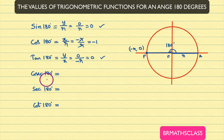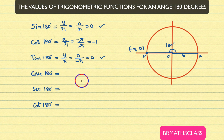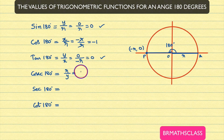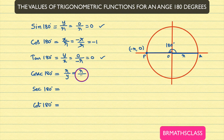Now, we will find cosecant 180 degrees. From the definition of trigonometric functions, cosecant theta is defined as r divided by y. R means the radius of this circle. Y means the y coordinate of this point, which is 0. As the denominator is 0, this ratio is not defined.